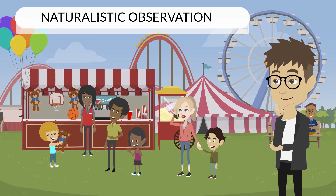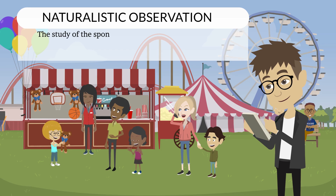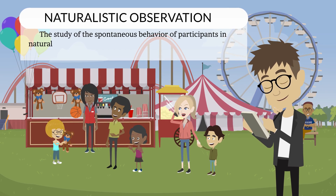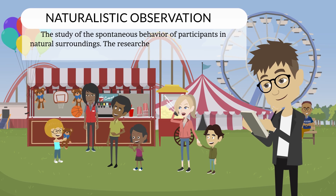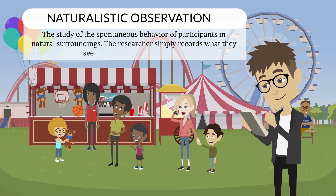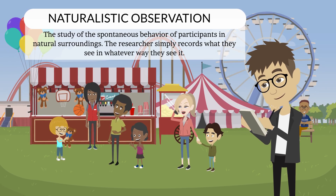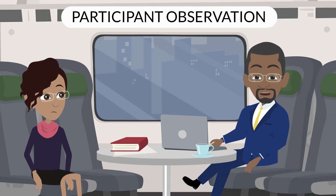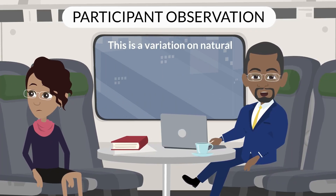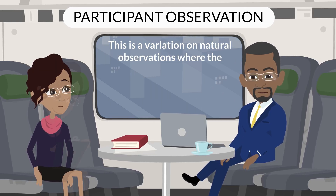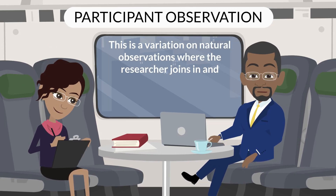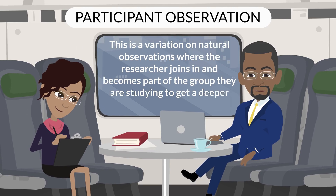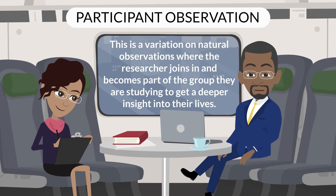Naturalistic observation is the study of the spontaneous behavior of participants in natural surroundings, where the researcher simply records what they see in whatever way they see it. Participant observation is a variation on naturalistic observation where the researcher joins in and becomes part of the group they are studying to get a deeper insight into their lives.